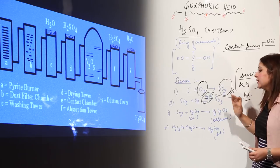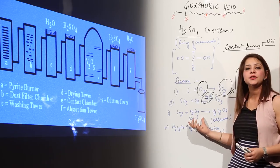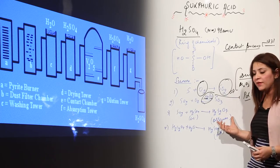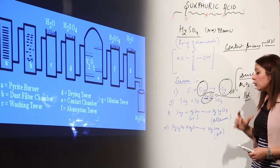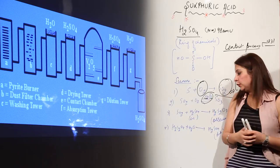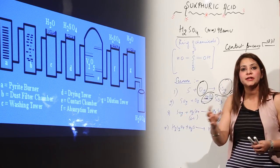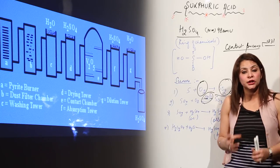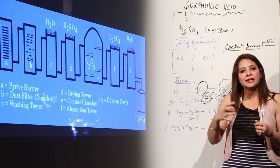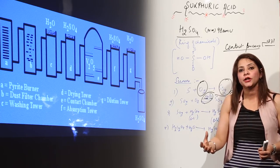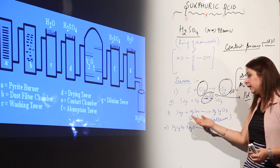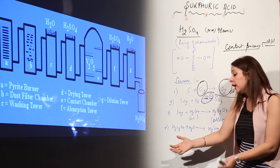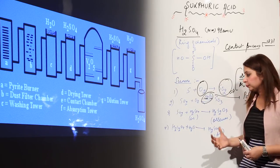Sulfur trioxide is mixed with concentrated sulfuric acid to produce the highly concentrated sulfuric acid, oleum (H2S2O7). The reason we don't add SO3 directly to water is that the reaction is highly exothermic and leads to an explosion. Instead, SO3 is reacted with concentrated sulfuric acid to form oleum, which is then safely diluted with equal amounts of water.